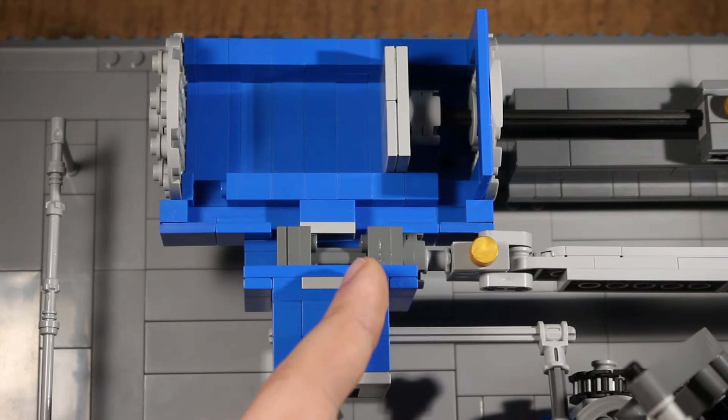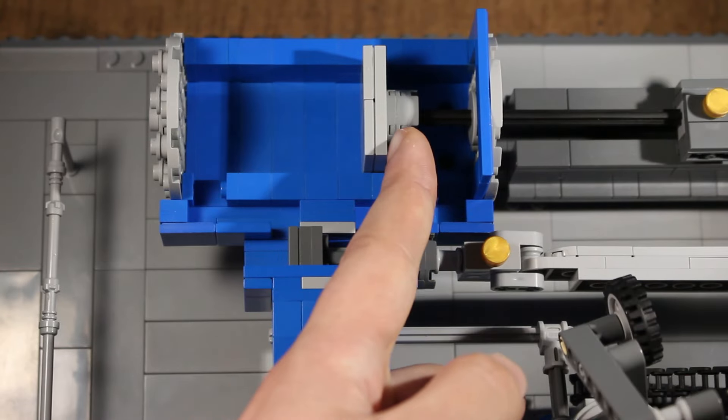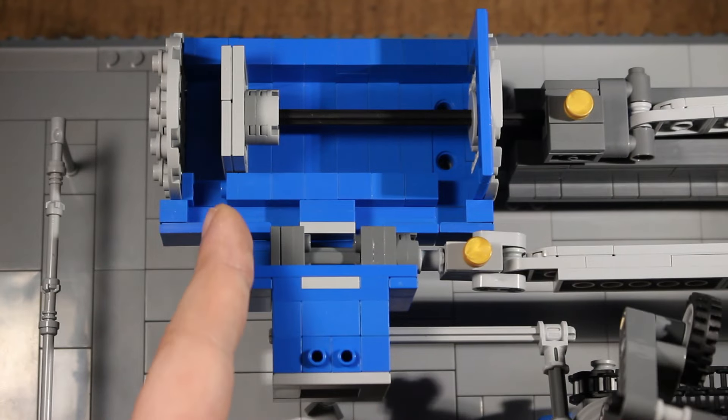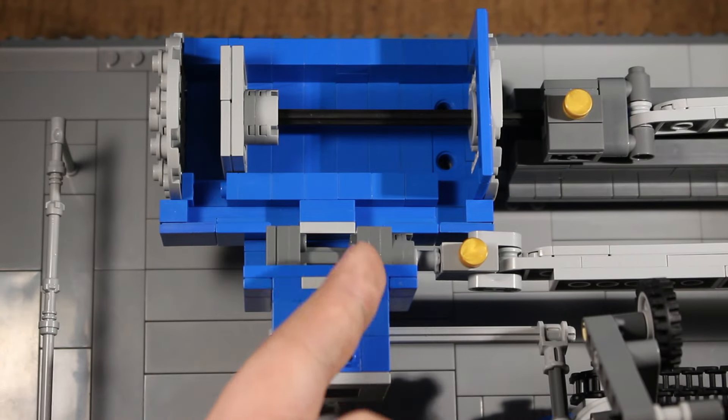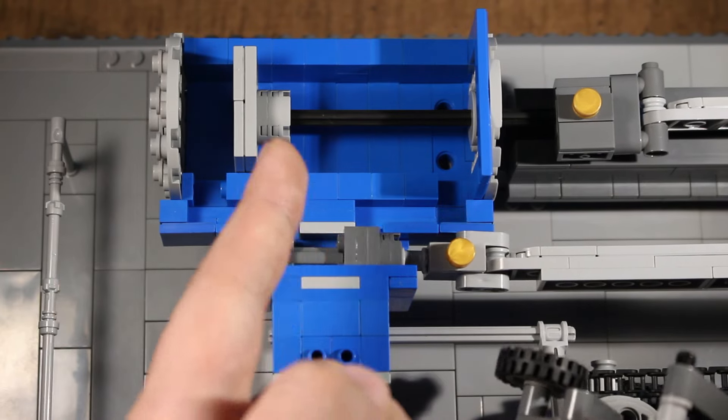This back port allows steam to flow in behind the piston and push it forward. Then once the piston gets to the very top of the cylinder, the valve closes the back port, opens the front one, and everything starts over.